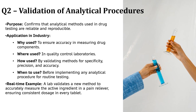Next is ICH Q2, Validation of Analytical Procedures. This guideline is about making sure the methods we use to test medicines are accurate, reliable and reproducible. Imagine taking a painkiller, but the amount of active ingredient isn't consistent in every tablet — that could lead to overdosing or underdosing. This guideline ensures that the tests used to measure drug components are precise and trustworthy.